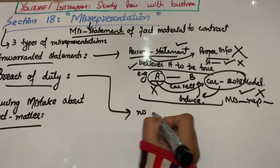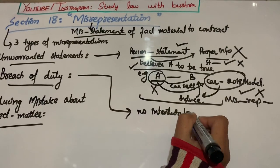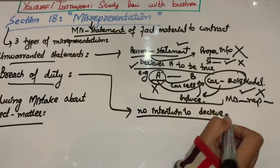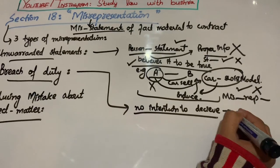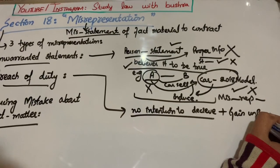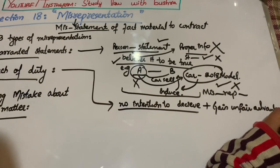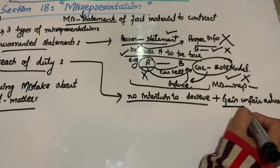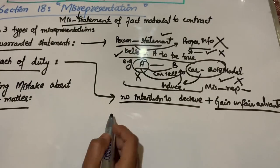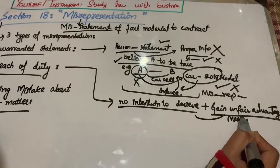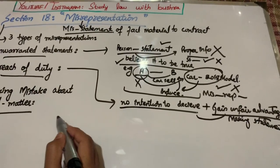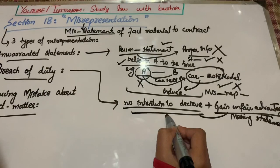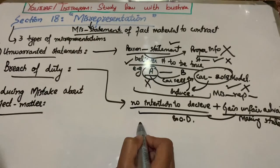Second آجاتا ہے breach of duty. Breach of duty میں کیا ہے - جب ایک بندے کی intention نہیں ہے دوسرے کو دھوکہ دینے کی، لیکن یہاں gain of unfair advantage ہے. وہ ناجائز فائدہ حاصل کر رہا ہے. So we can say that there is always a breach of duty involved.